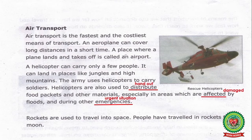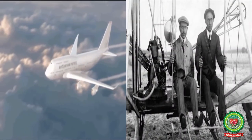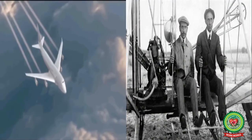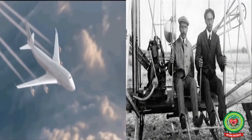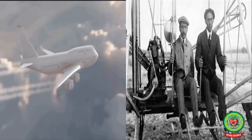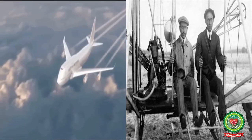An aeroplane can cover long distances in a short time. A place where a plane lands and takes off is called an airport. An aeroplane is an amazing invention of the Wright Brothers. It is a means of transport through which thousands of kilometres can be travelled in a short time. An aeroplane operates from an airport.